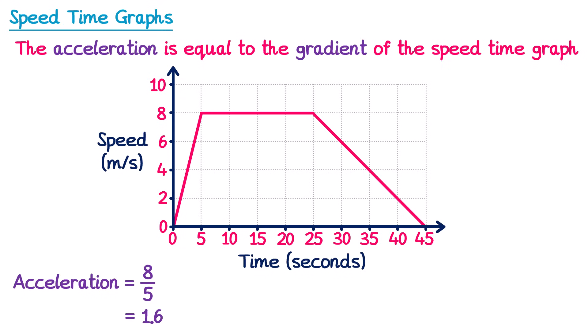The unit we give to acceleration is m/s². Now in the second part of the race, we said there's a constant speed and no acceleration, so the numerical value for the acceleration must be 0 m/s².